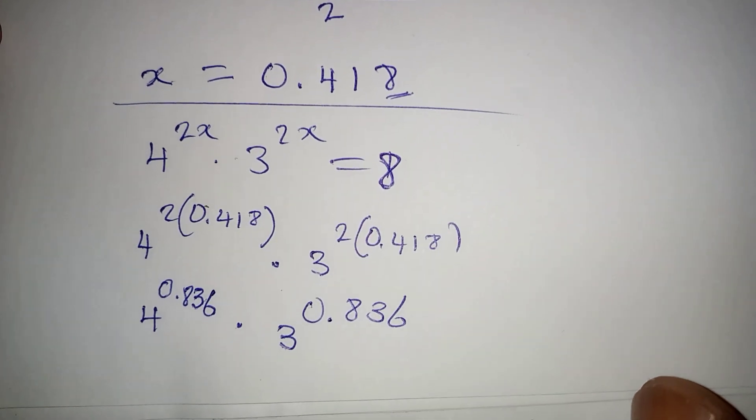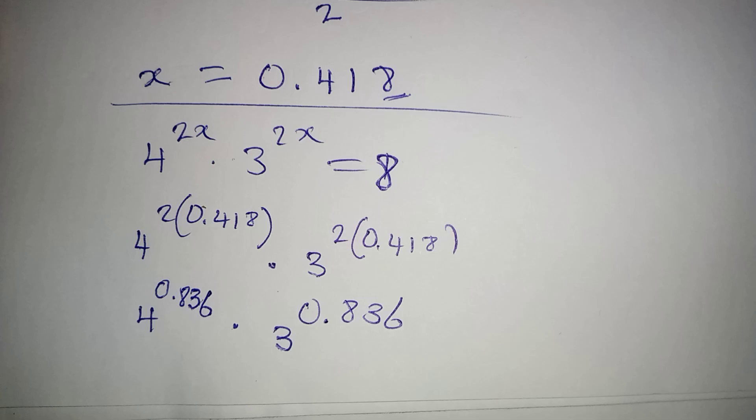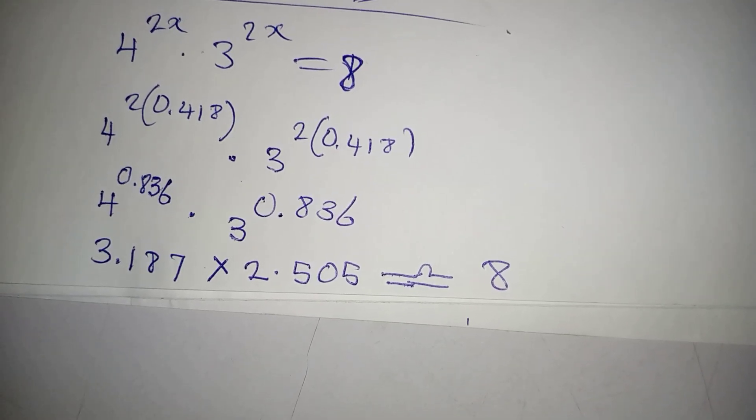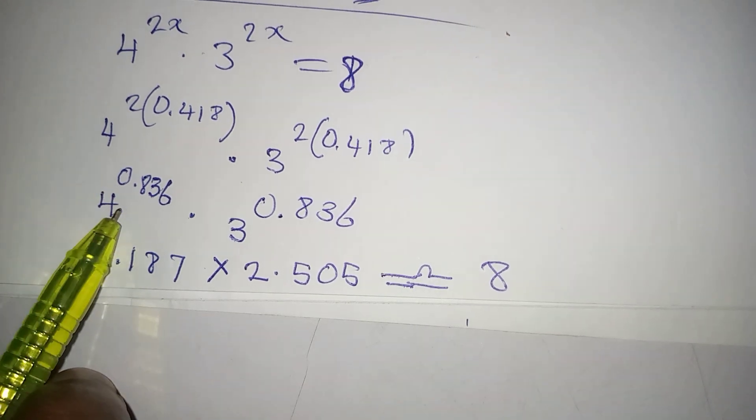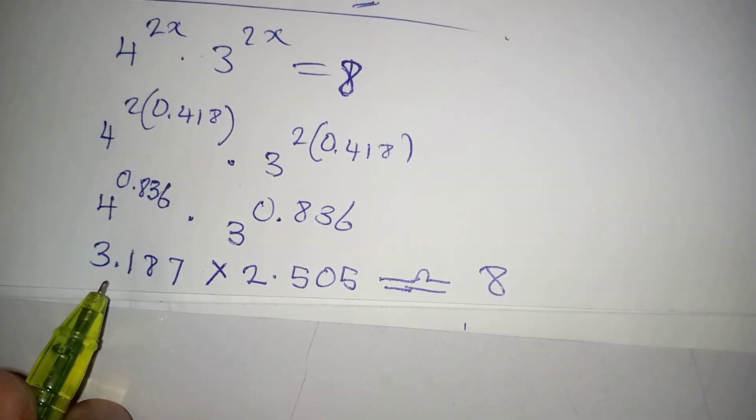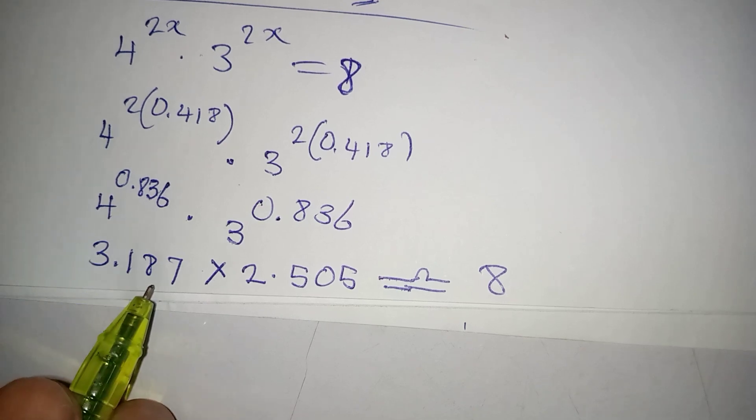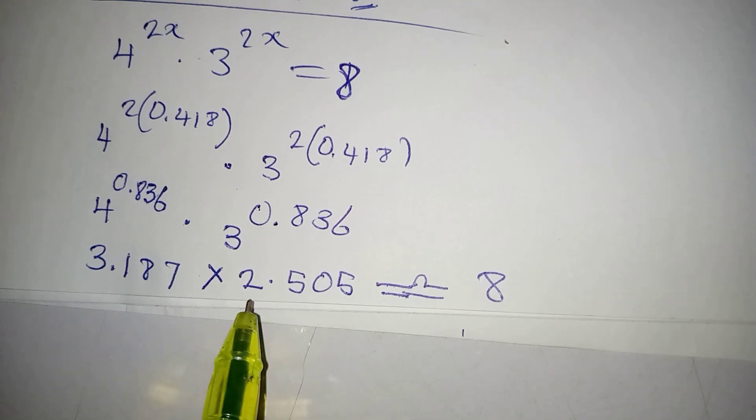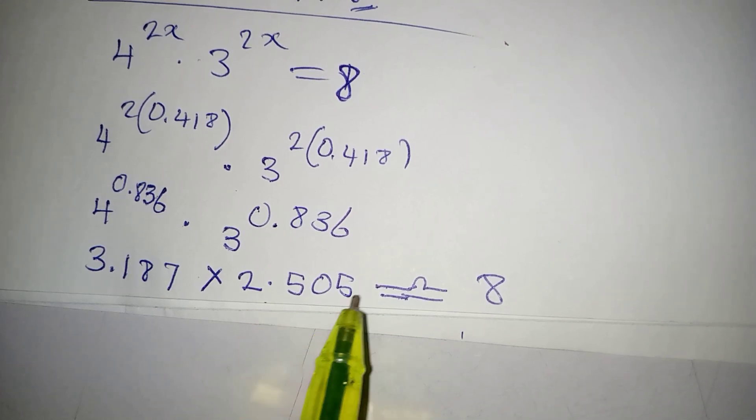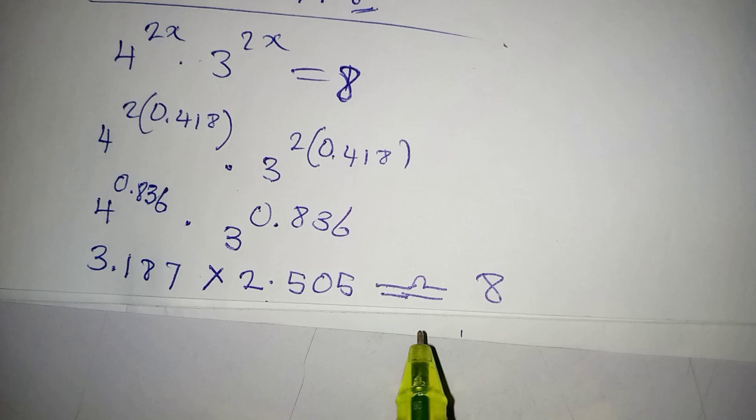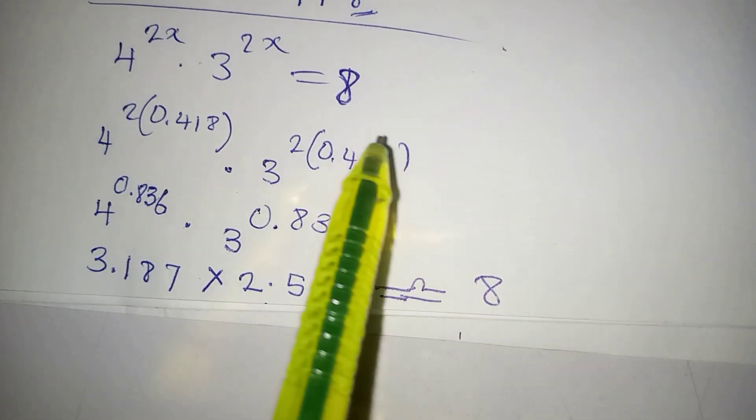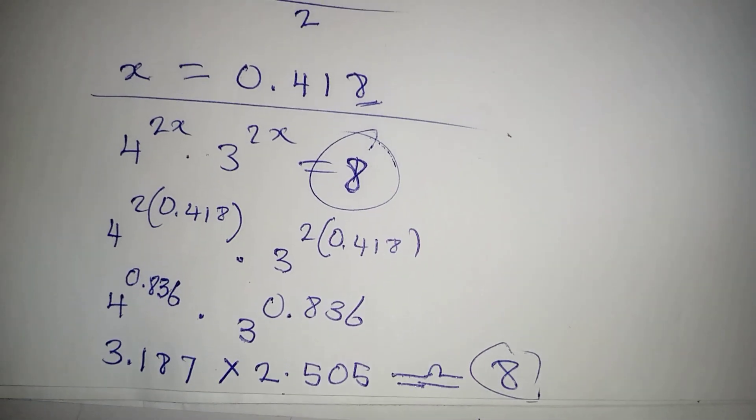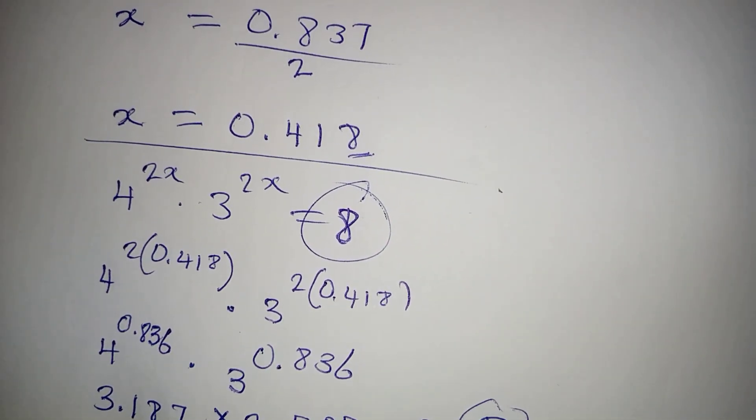Now I'm going to use a calculator to deal with this very quickly. We have 4 to the power of 0.836, which is approximately 3.187, times 3 to the power of 0.836, which is approximately 2.505. When you multiply these two, you get an approximated figure of 8. This means that we are correct to say that our x is 0.418. Thank you for watching.